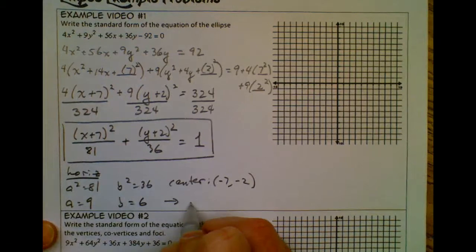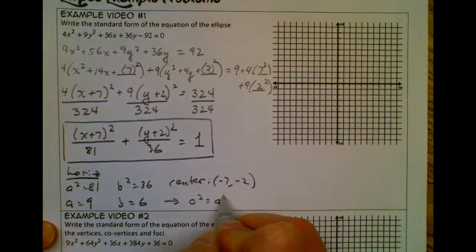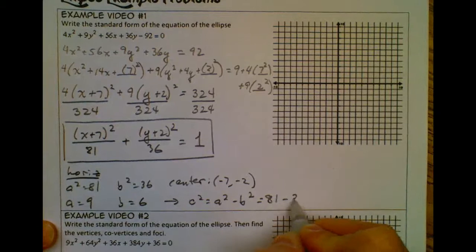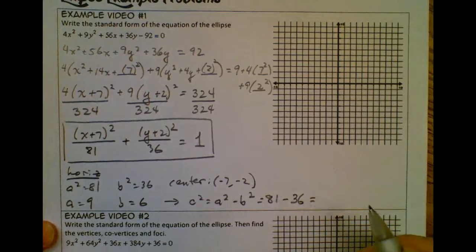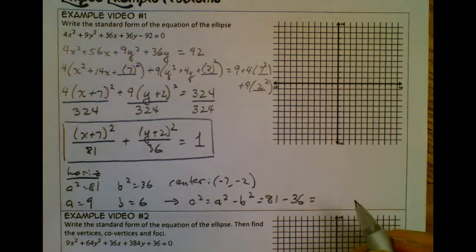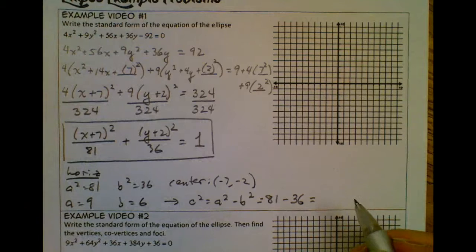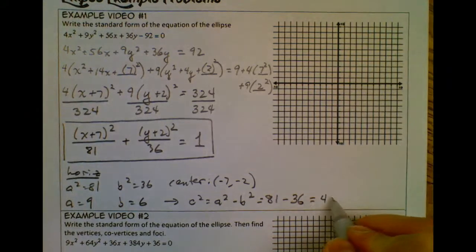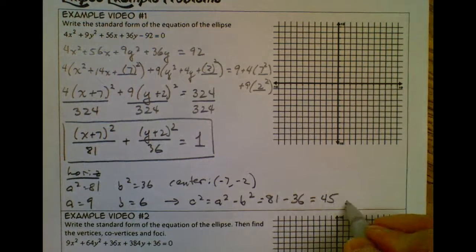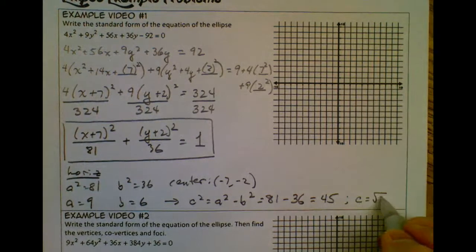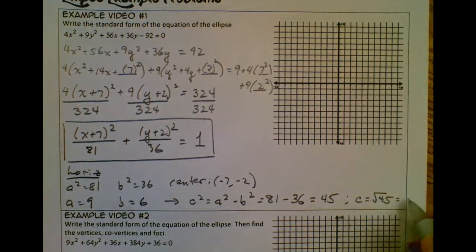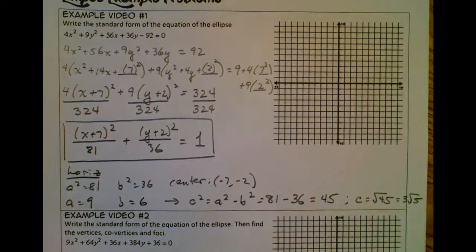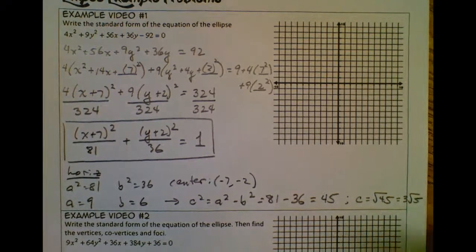But I do want to go ahead and find c. So I know that c squared is going to be a squared minus b squared, so that's 81 minus 36, which is going to be 45. Okay, so that means that c is going to be square root of 45, which is going to be 3 root 5, if I did my calculations correctly. If I didn't, let me know in class. Alright, that's it.